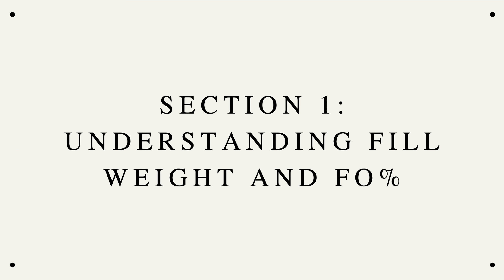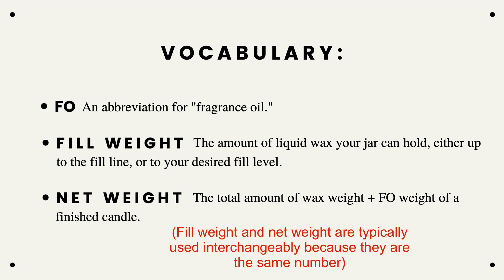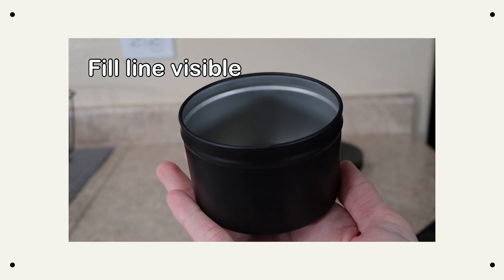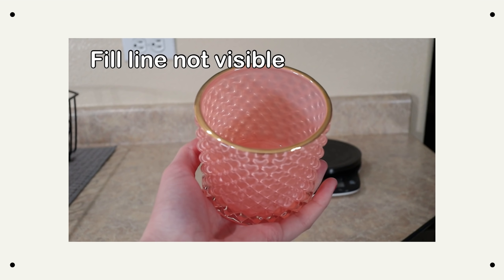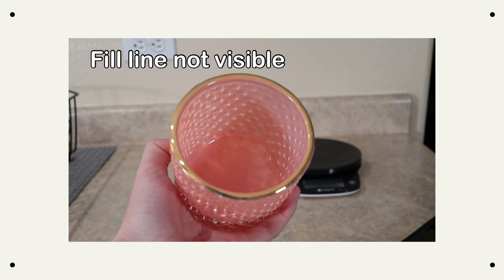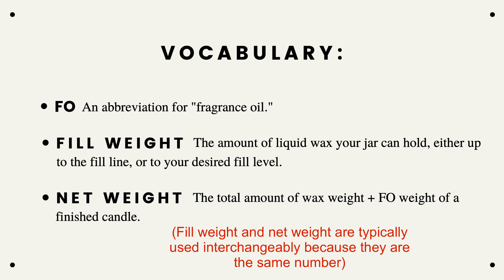Section one is understanding fill weight and fragrance oil percentage. FO is an abbreviation for fragrance oil — it's very commonly used in the candle making community. Fill weight is the amount of liquid wax your jar can hold, either up to the fill line if your jar has one, or to your desired fill level. This tin has a fill line showing how high to fill it up, whereas this jar does not have a visible fill line.